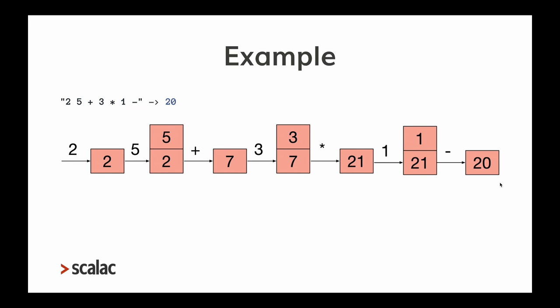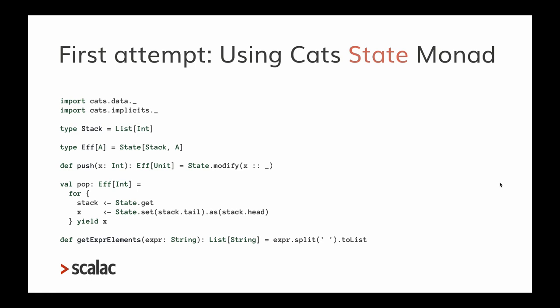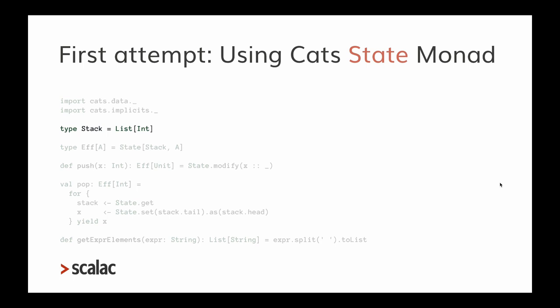For the first attempt I'm using the Cats State monad. I have a Stack type that's simply a list of integers, and an Effect type that is the State monad where the state is the Stack type. I also have auxiliary methods for pushing and popping elements from the stack, and a helper function to parse the original expression string into its elements.